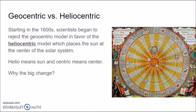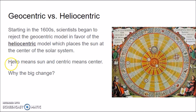Starting in the 1600s, scientists began to reject the geocentric model in favor of the heliocentric model, which places the Sun at the center of the solar system. In the heliocentric model, the Sun is in the center, and all the planets, including Earth, orbit around the Sun. Helio means sun, and centric means center.